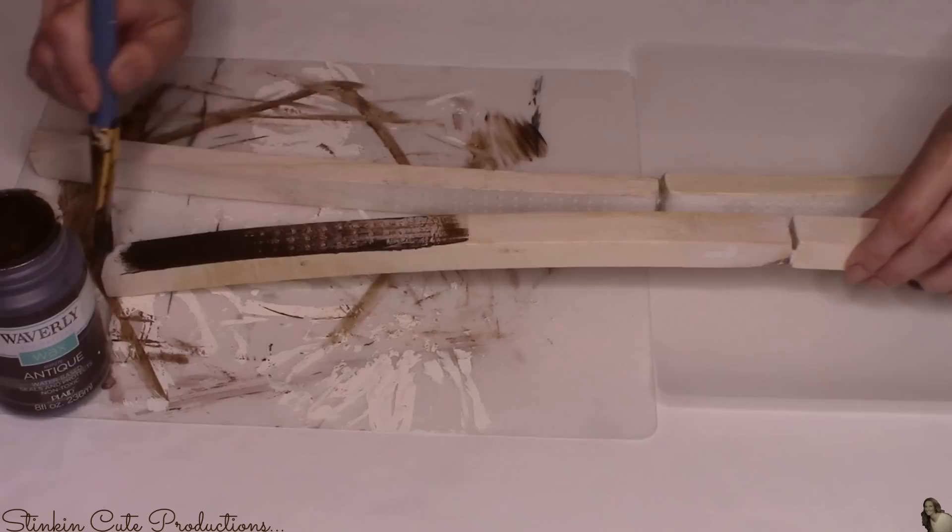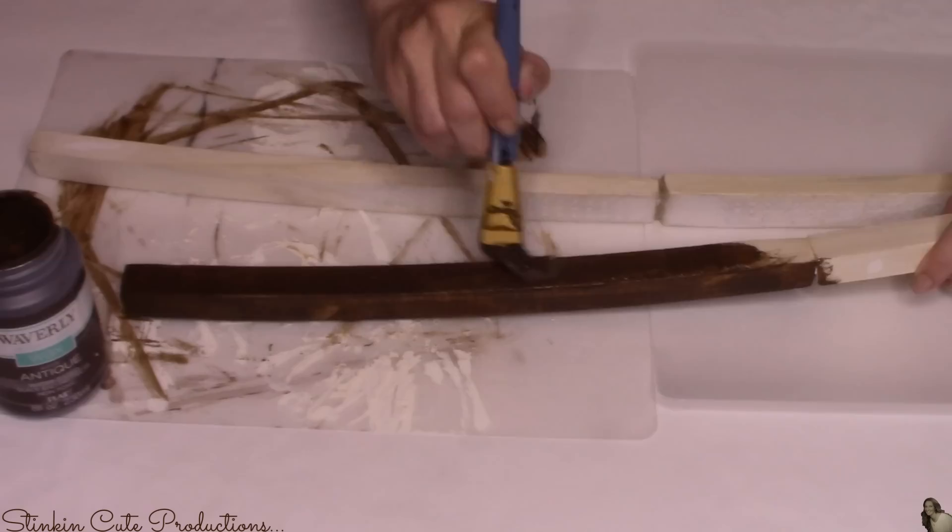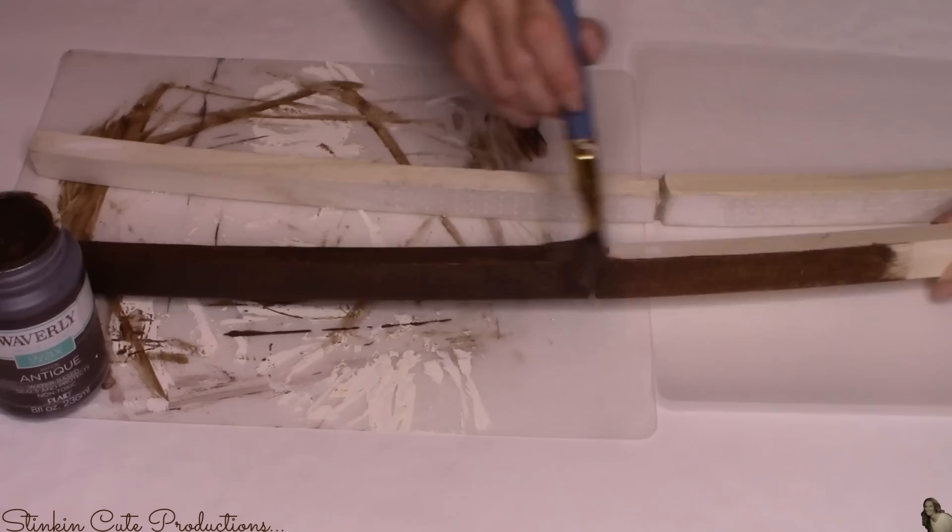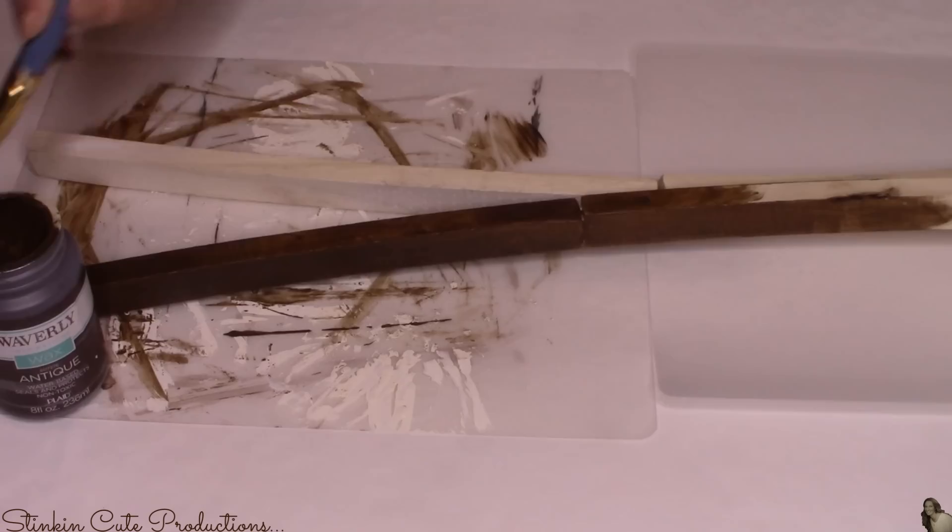To paint both my sticks I'll be using this Waverly wax paint in the color of antique. This paint acts kind of as a stain. What's really cool about this paint is that when you apply it if you were to take a cloth and wipe over it after you've applied it and wipe off some of the excess paint you are left with a gorgeous colored stain. You could also just apply it and leave it so you get this darker richer color and that's what I'm gonna do because I really love this dark brown. I think it gives it more of a rustic feel.